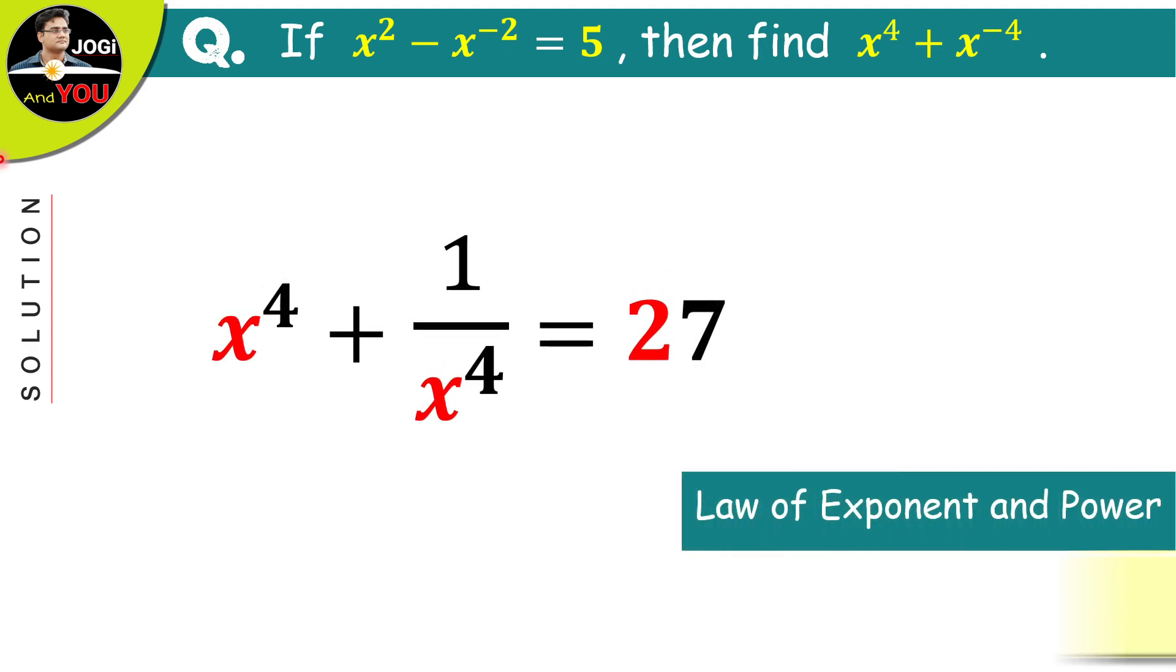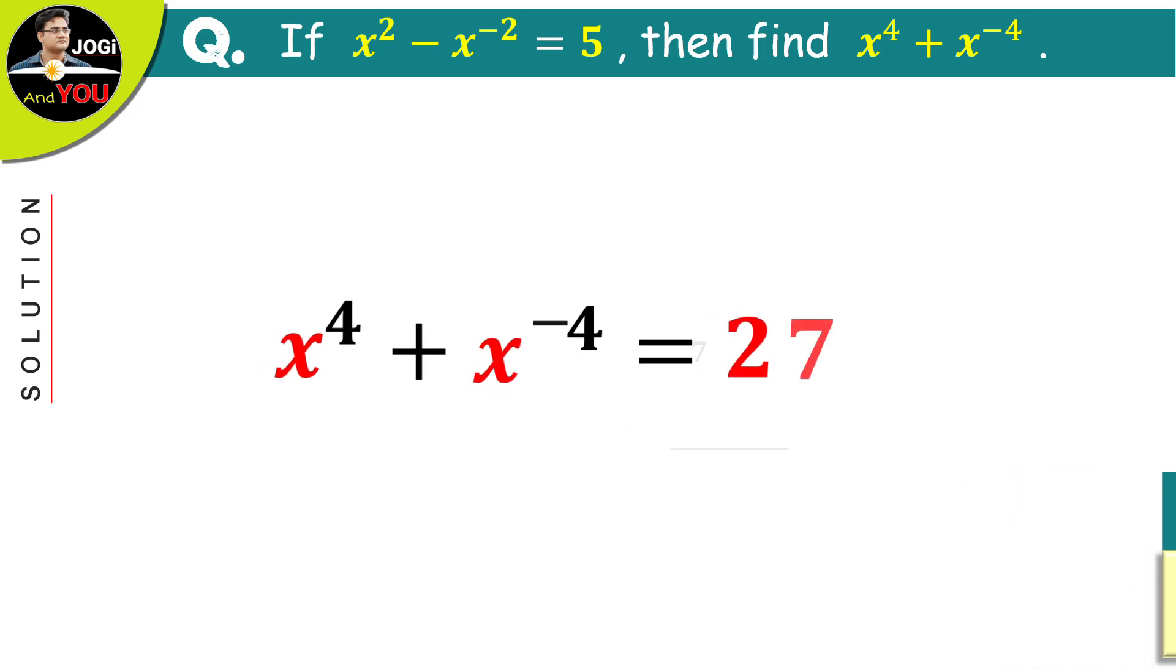And now we will use the same power rule one more time, and instead of 1 over x to the power of 4, we will write x to the power of negative 4 just like this. So now we have here x to the power of 4 plus x to the power of negative 4 is equal to 27.